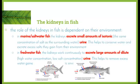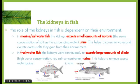In freshwater fish, the kidneys work continuously to excrete large amounts of dilute — so high water concentration, low salt concentration — urine. This helps to remove the excess water gained from their hypotonic environment. Freshwater fish have lots of water in their environment, and water is able to move into the fish by osmosis, so they have large amounts of water they need to get rid of.